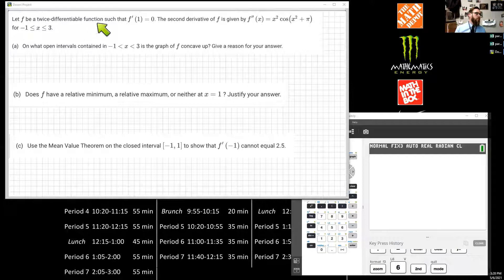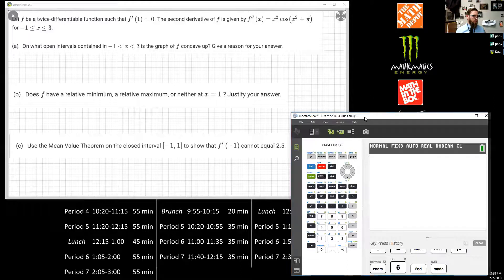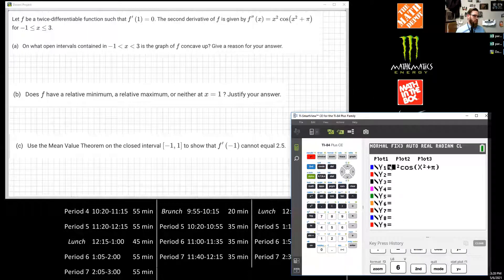Let F be a twice-differentiable function such that F'(1) = 0. The second derivative of F is given by this for x values from -1 to 3. Now, this is a calculator problem, and so what I suggest on a calculator problem is that you put that function right into the Y= window because you know you're going to use it, and then you do it slowly to make sure you do it right.